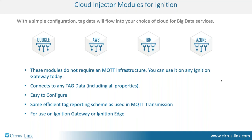For enterprise-type solutions, we've built cloud injector modules for Ignition: the Google Injector, the AWS Injector, the IBM Injector, and the Azure Injector. These modules do not require an MQTT architecture — they run on any Ignition platform currently in place, bridging the gap between OT and IT. They connect to any tag data and are very easy to configure. If you have an existing Ignition platform you can install one of these modules in several minutes and, with the endpoint strings to connect to the different cloud platforms, start sending data to the cloud as a standardized approach within minutes.